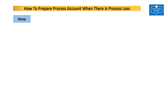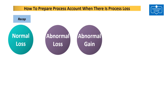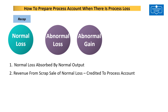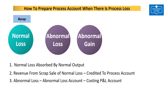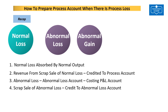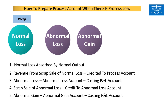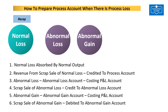Let us recap what we learnt in the previous video. In a process there can be normal loss, abnormal loss, or abnormal gain. One, the normal loss is absorbed by the normal output. Two, revenue from scrap sale of normal loss will be credited to the process account. Three, abnormal loss will be transferred to abnormal loss account before finally getting transferred to costing profit and loss account. Four, scrap sale of normal loss will be credited to abnormal loss account. Five, abnormal gain will be transferred to abnormal gain account before finally getting transferred to costing profit and loss account. Six, the opportunity loss from scrap sale of abnormal gain will be debited to abnormal gain account.